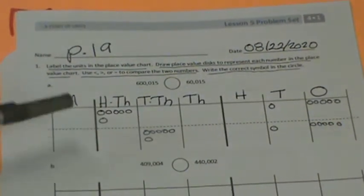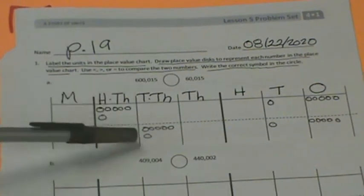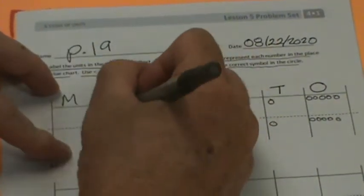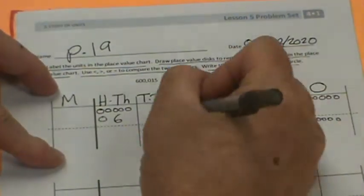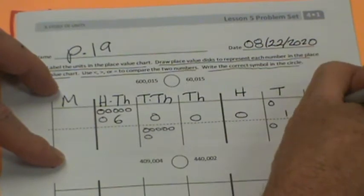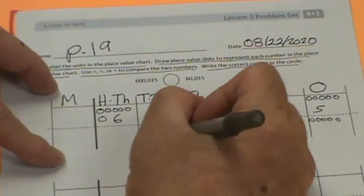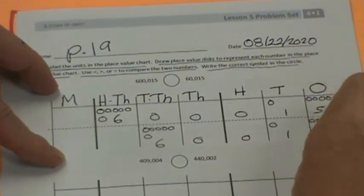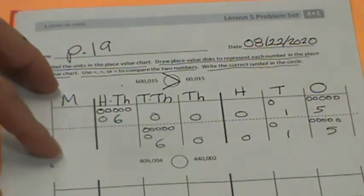So clearly we can see that this number is larger because there's six hundred thousands here and only six ten thousands there. We also could have used whole numbers like this: 600,015 and 60,015. So we can see that the 600,000 is indeed greater. The alligator eats the greater number.